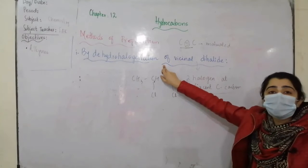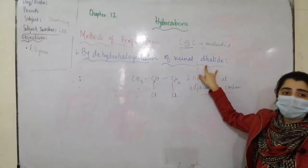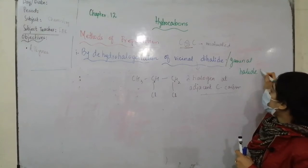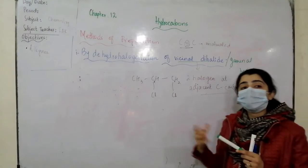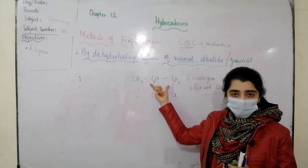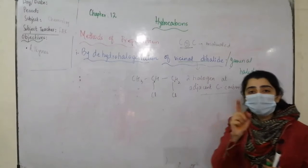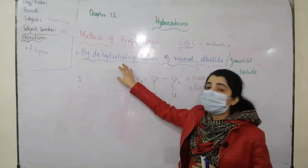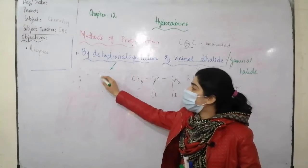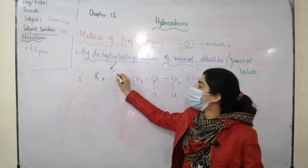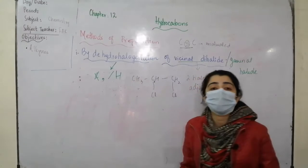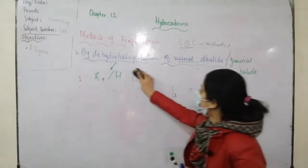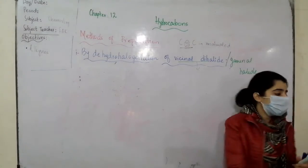When you have dehydrohalogenation in alkyne preparation, you use a vicinal dihalide. This vicinal dihalide has two adjacent carbon atoms with two halogen atoms attached. What do we do? Dehydrohalogenation — you remove H from one adjacent carbon and halide from the other. We will treat the vicinal dihalide with potassium hydroxide in the presence of some alcohol. This reaction occurs in two steps.